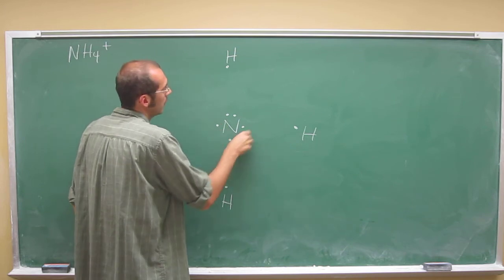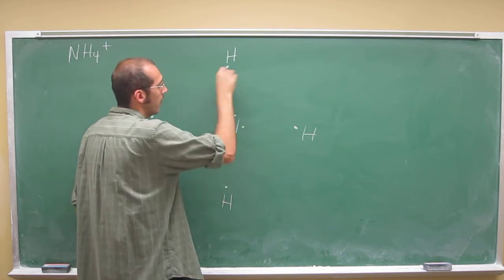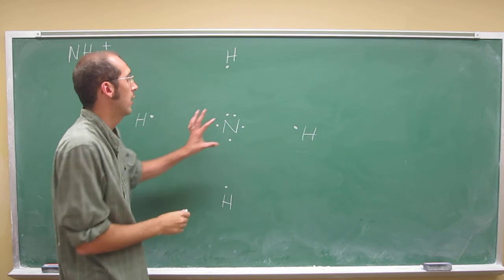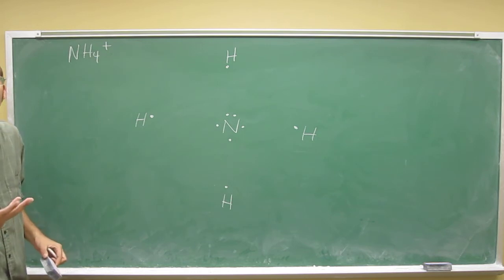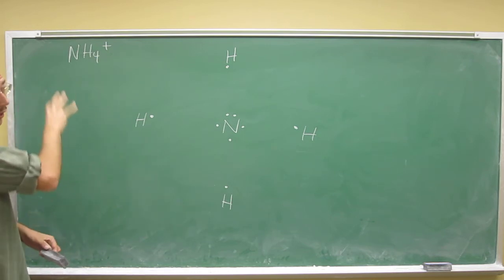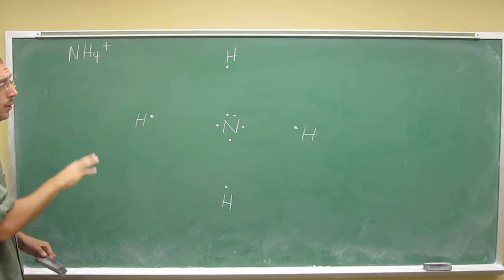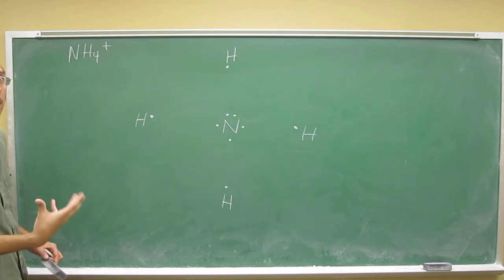But if we have all those electrons and we try to bond all these things together, then we'll end up with nine electrons around that nitrogen, and that's too many. You can't have more than eight electrons around nitrogen. So what we can do is to show that charge. That means that something in this molecule or this molecule altogether has lost an electron.